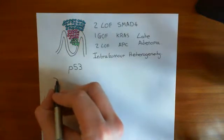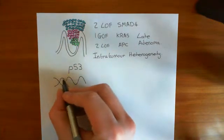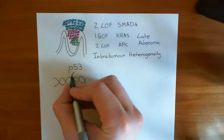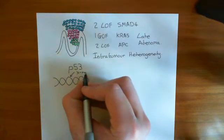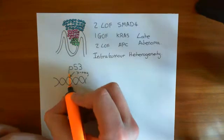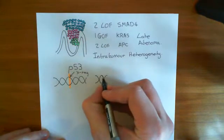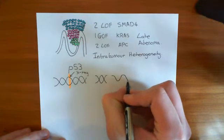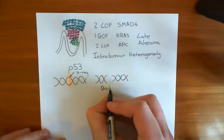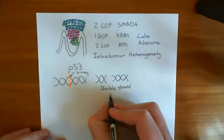Let's look at how P53 is involved in the response to DNA damage. Let's say a cell's DNA is damaged — maybe it gets a mutation or something bad happens. The archetypal example is a double strand break. Some x-rays come in and cause the DNA to break, splitting into two portions. This double strand break is a specific example of DNA damage that can be caused by x-rays.